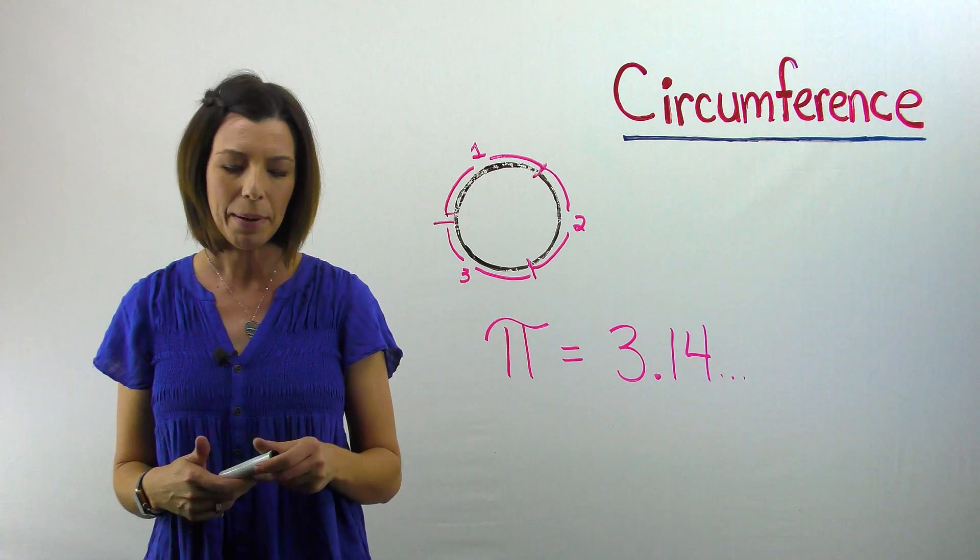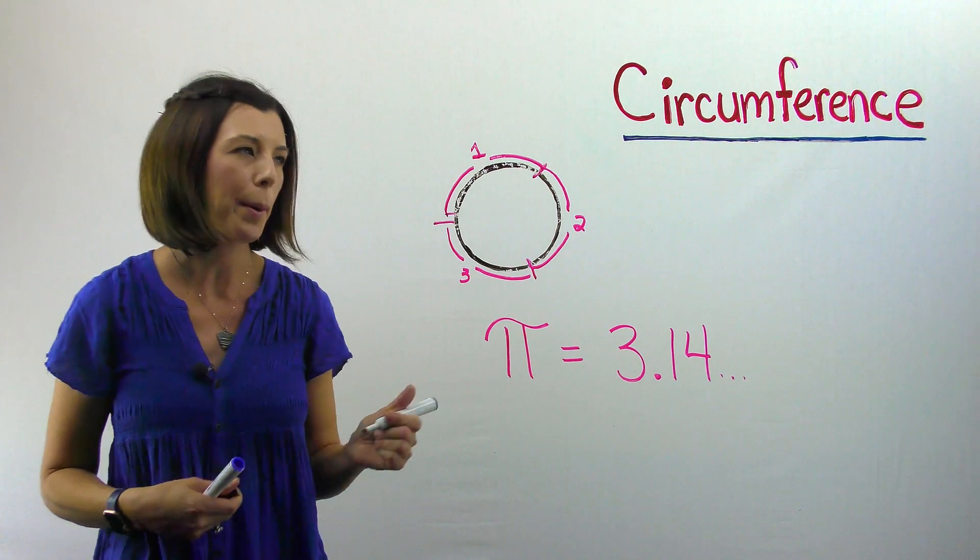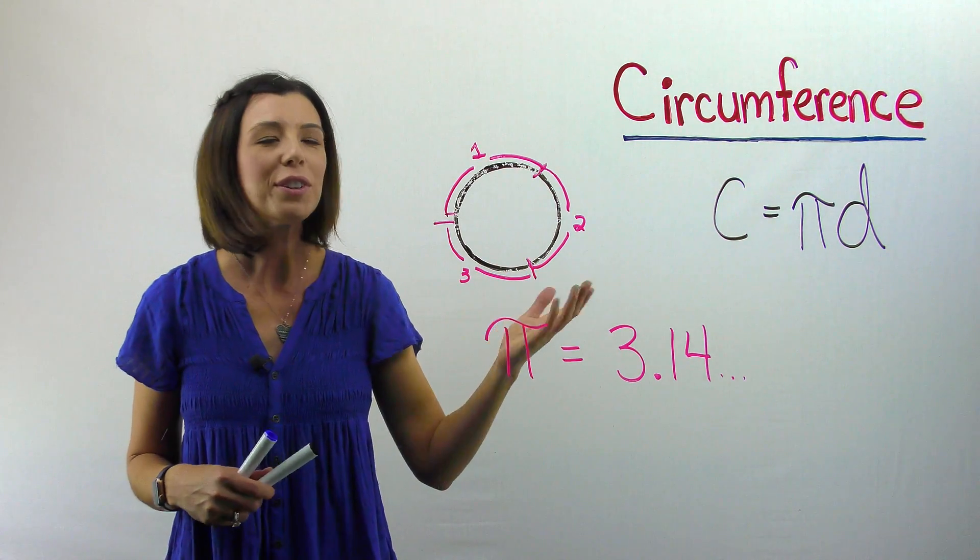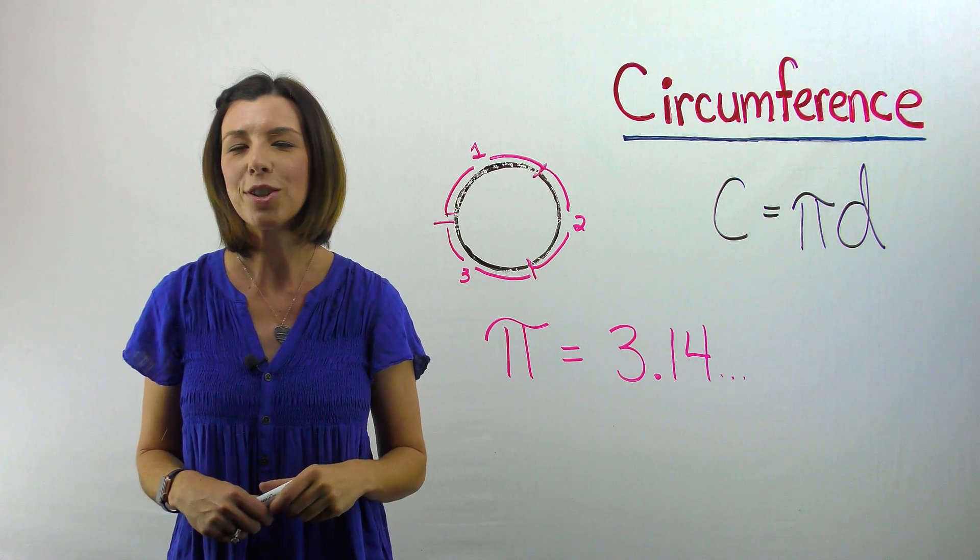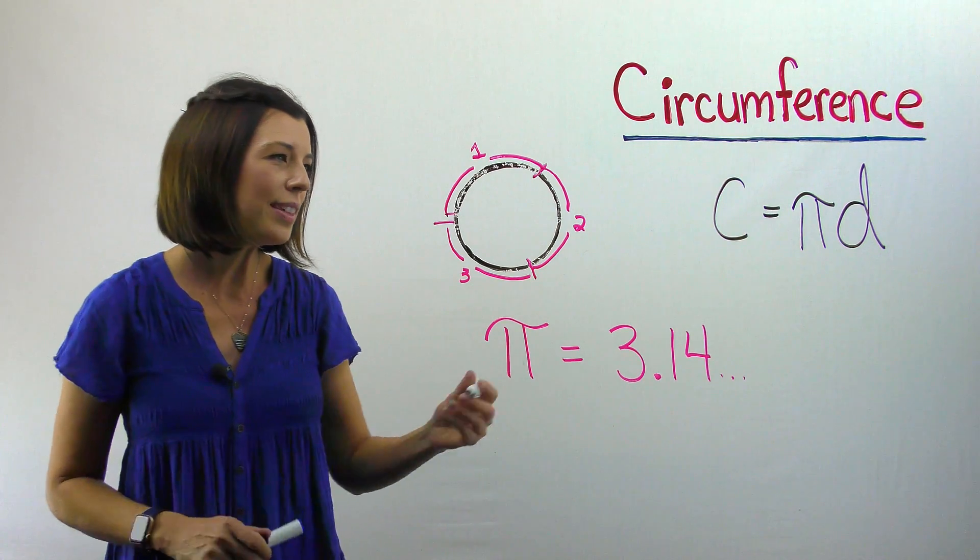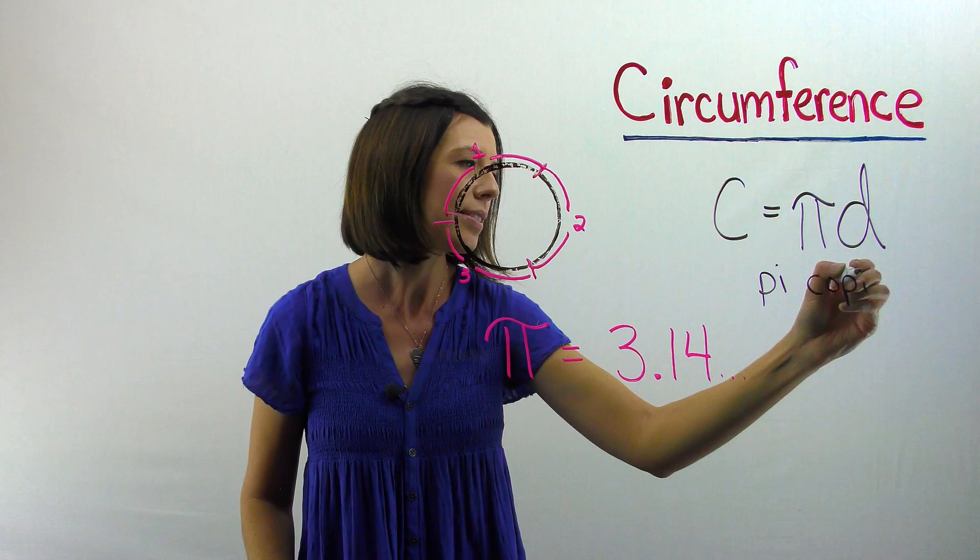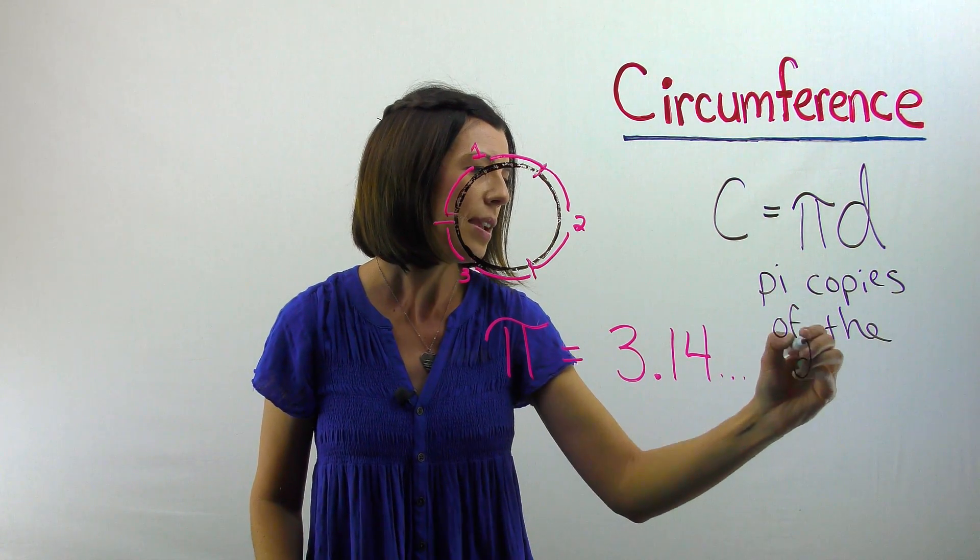So now let's go back to thinking about circumference. And what's the formula that you remember? You might remember that the formula is circumference equals pi times diameter. Remember we can think of multiplication as copies of. So could we think of this as pi copies of the diameter?